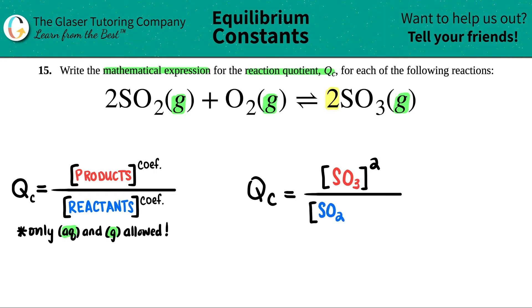Close the bracket, and then just see if I need a coefficient, or aka an exponent. So here I have a two in front of the SO2. So that means I have to raise that to the second, aka square it.